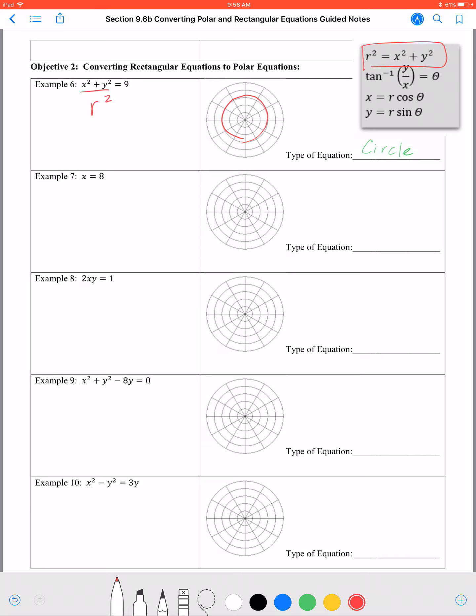We have r squared equals 9. We take the square root of both sides and we get r equals plus or minus 3.